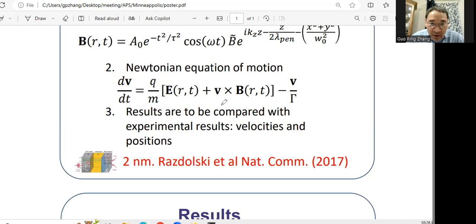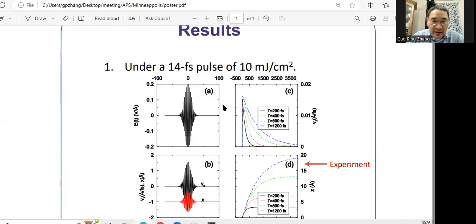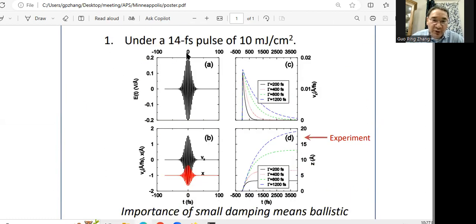Let me continue. What I want to show you is this. This is our theoretical results. First figure that I showed you is our laser pulse. The B part is the Vx, the velocity along the x direction, and velocity along the y direction.